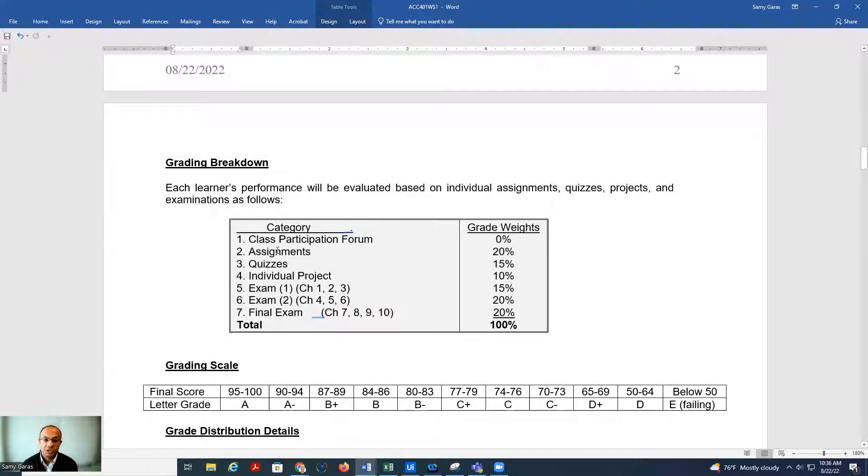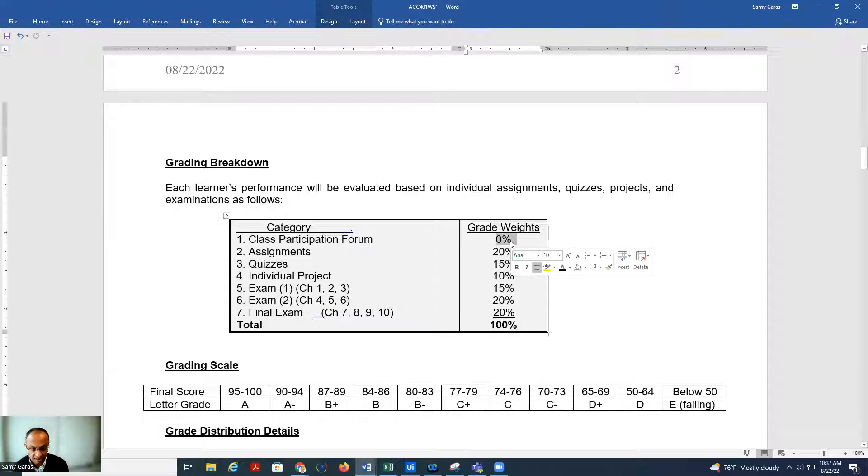In this course we will have a participation forum where you can share your thoughts and questions on the material of that week, but they don't take any grade from your final grade. So participation in the forum is quite optional. The assignments will take 20% and the quizzes will take 15%. The assignments need more time, and this is the reason I give them extra points. The quizzes are straightforward, and you should be able to answer them within two attempts.